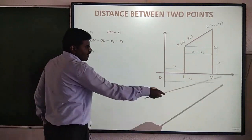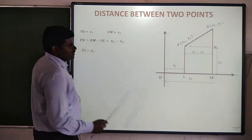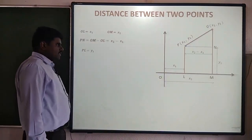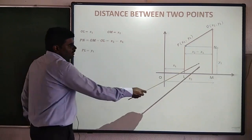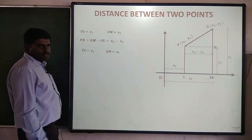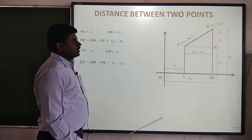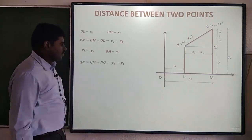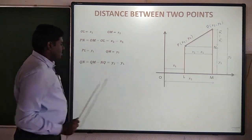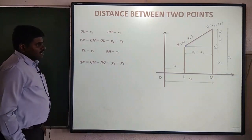Next, the Q and L distance. B and L distance is y1; both are equal distance. I find out Q and L distance is equal to y2. So the distance between Q and L is y2 minus y1.